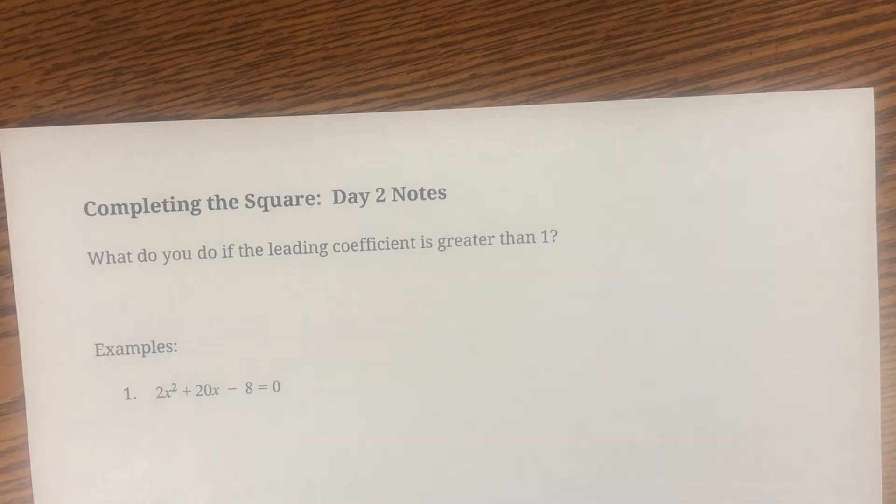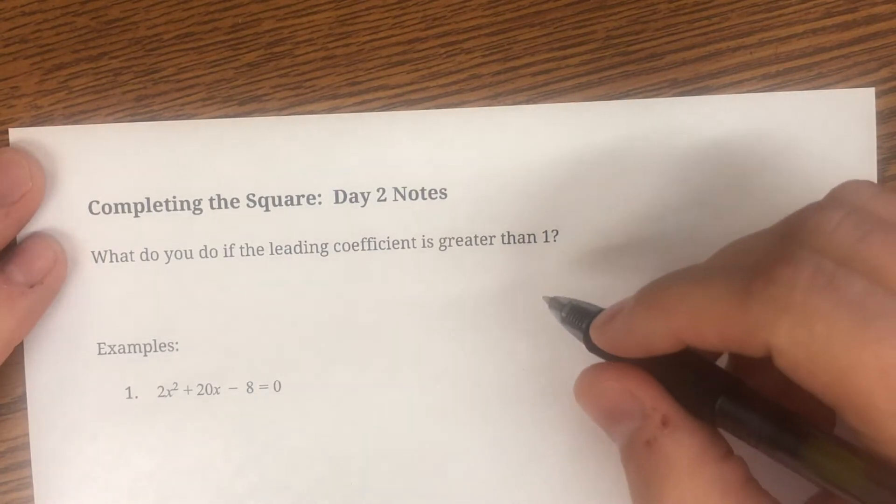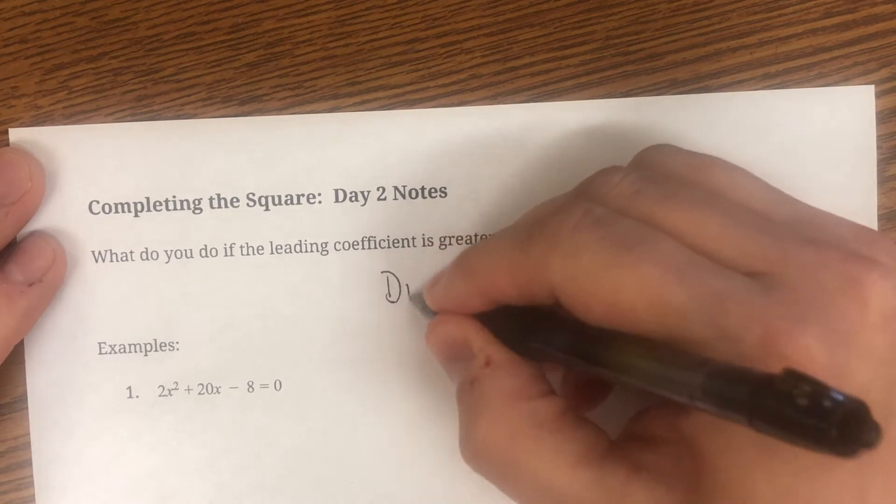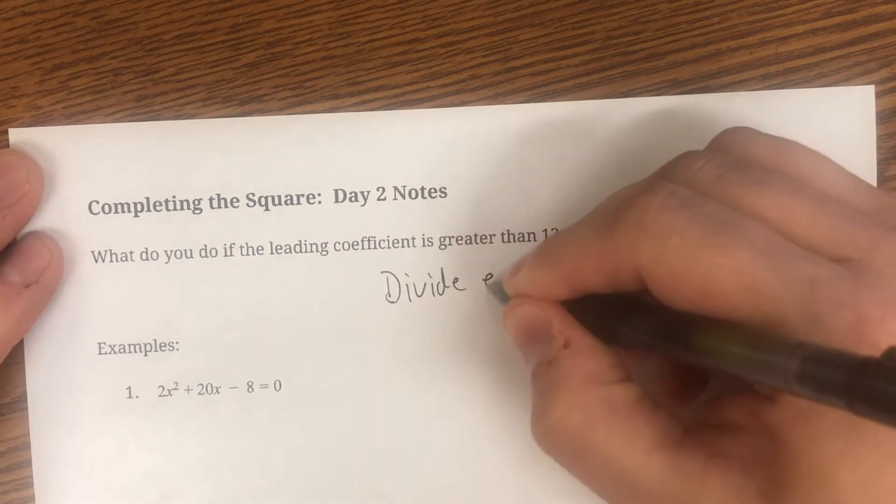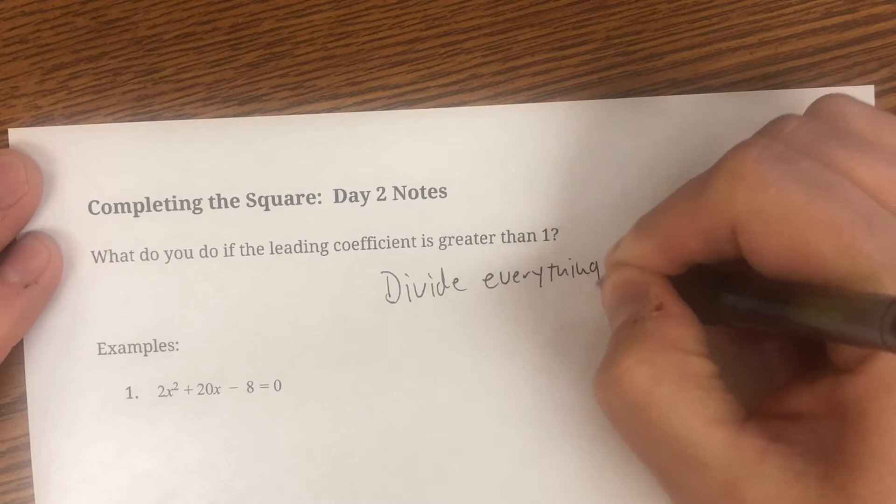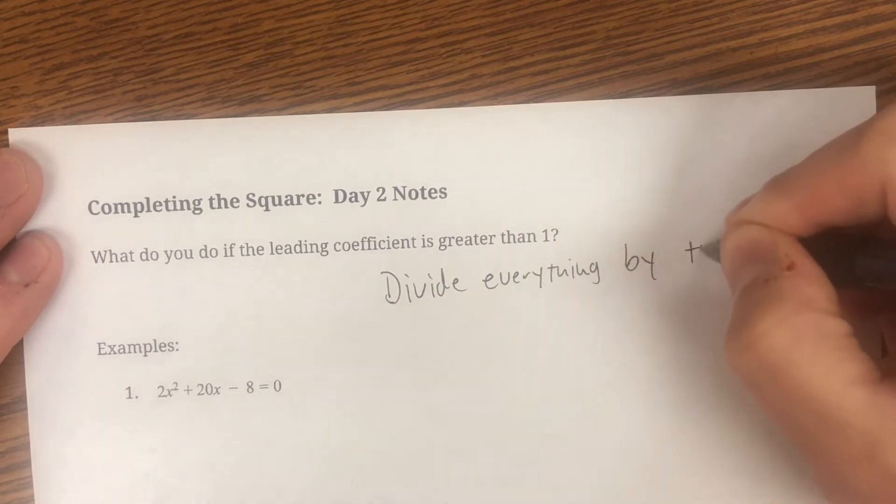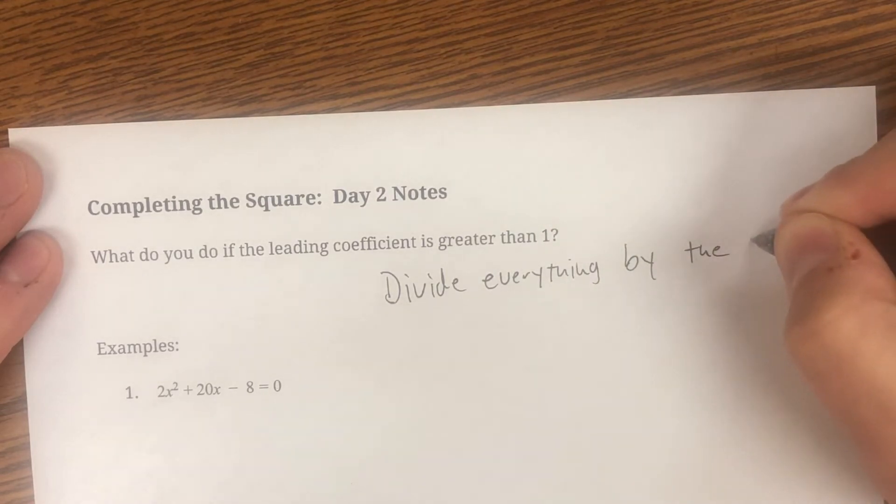So it's not saying x squared. It says something like 2x squared or 4x squared, 3x squared. We cannot use the completing the square process unless we can get that leading coefficient to be one.